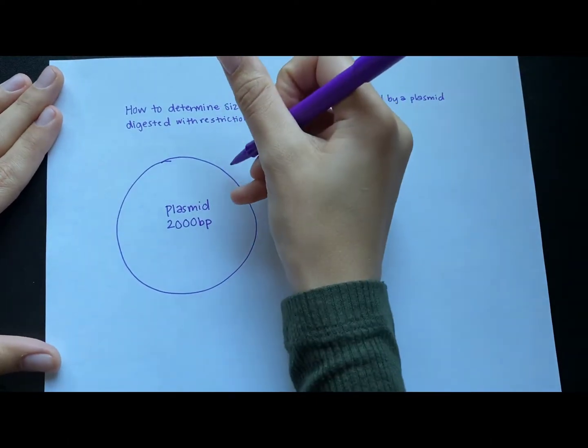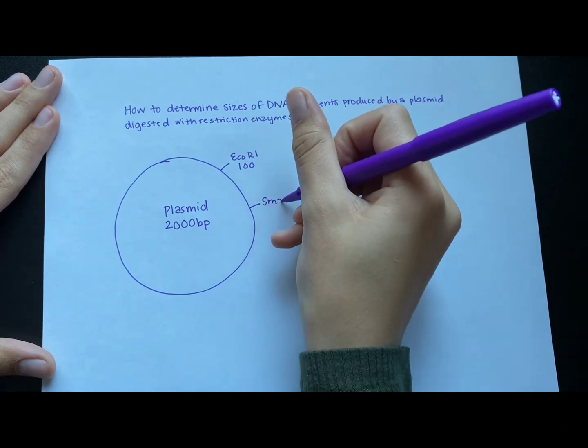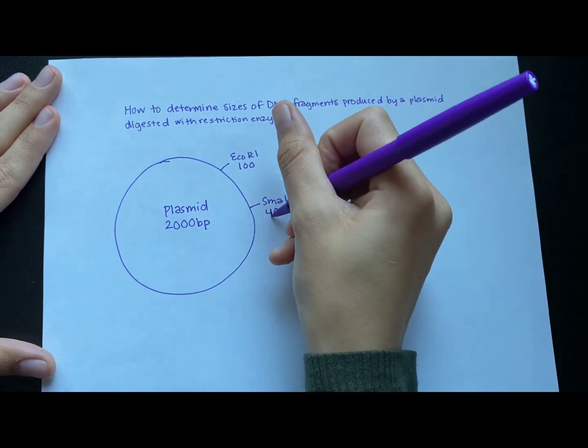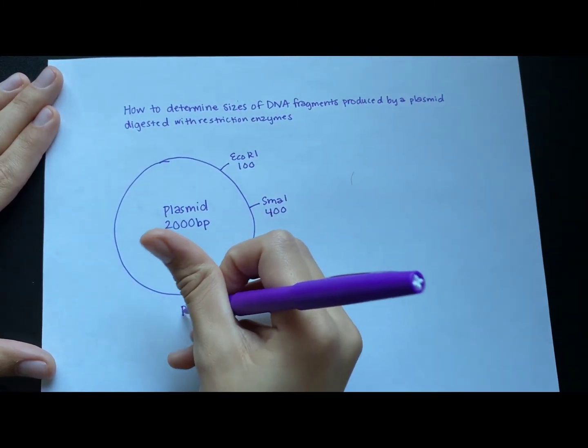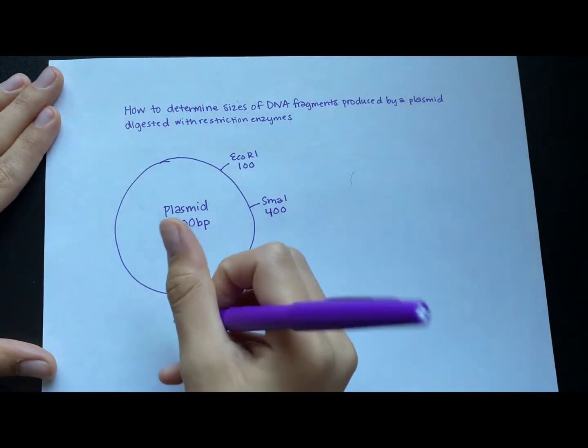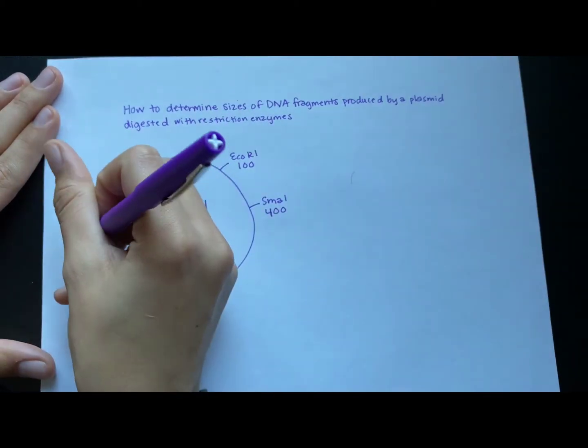So let's say about 100 base pairs in, there's an ECO-R1 restriction site. And then at the 400th base, there's the SMA-1 restriction site. Let's say at the 1,000th base pair, you'll find the PVU-2 restriction site. And at the 1,500th base pair, you'll find the PVU-1 restriction site.